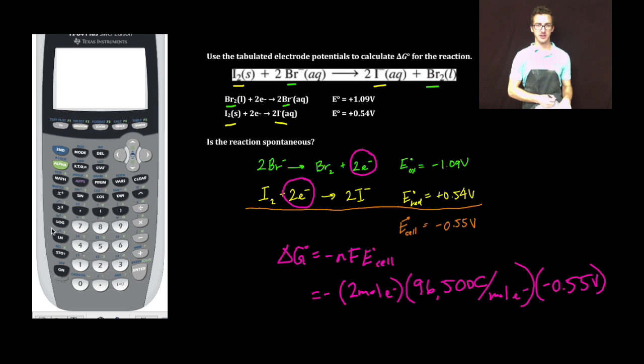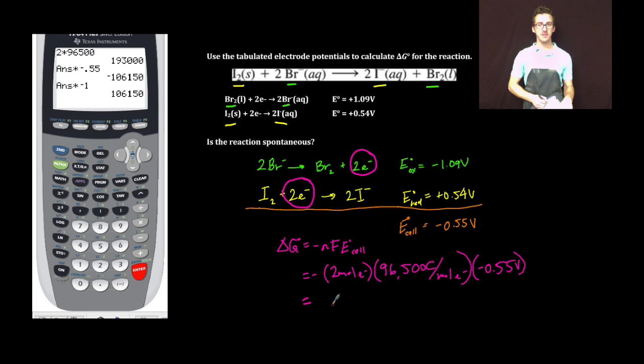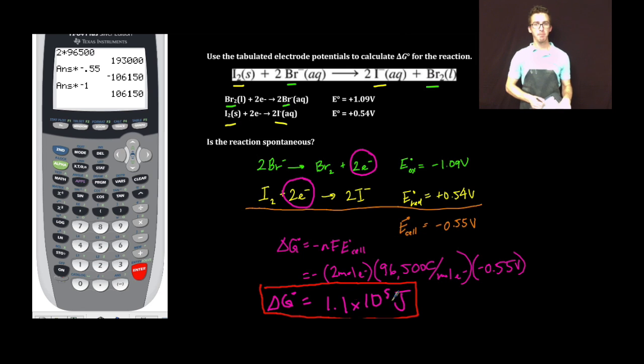Jump over to our calculator. I get a delta G value of 1.1 times 10 to the 5 joules. That's my value for delta G. Because the value of delta G is positive, the reaction is not thermodynamically favorable or non-spontaneous.